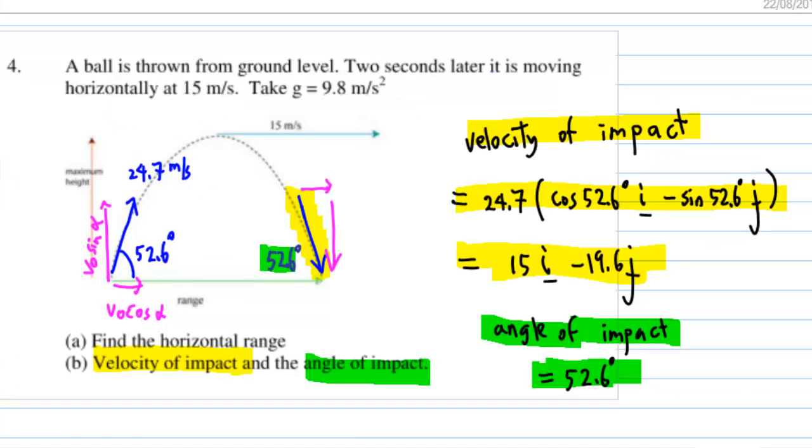By symmetry, velocity of impact equal to 24.7 times cosine 52.6 degrees i minus sine 52.6 degrees j, which is equal to 15 i minus 19.6 j. The angle of impact is 52.6 degrees.